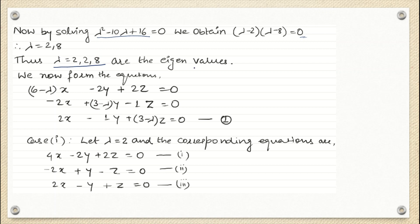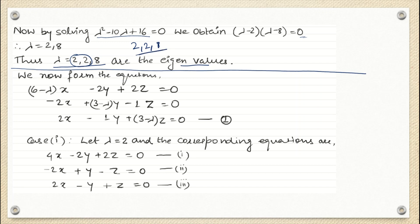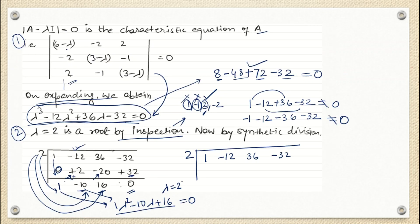These lambda values are the eigenvalues. We came to know that lambda has two equal values: 2, 2, and 8 — so the characteristic equation has equal roots, the repeated root being 2. Now the third step: we build the system of equations using the characteristic equation. The first column corresponds to x, the second to y, the third to z. The first equation is (6 minus lambda)x minus 2y plus 2z equals 0. The second equation is -2x plus (3 minus lambda)y minus z equals 0, and similarly the third equation.